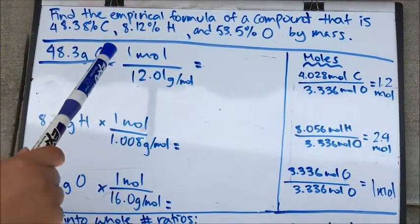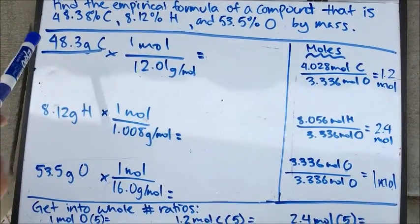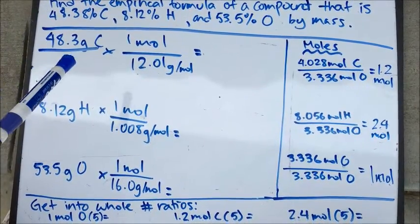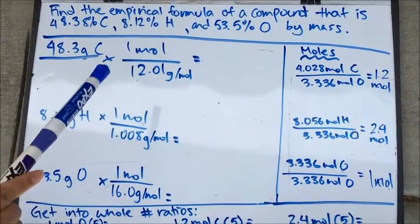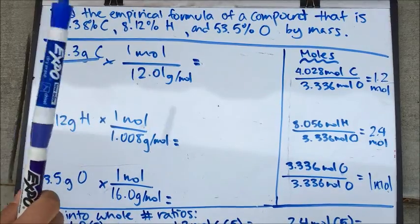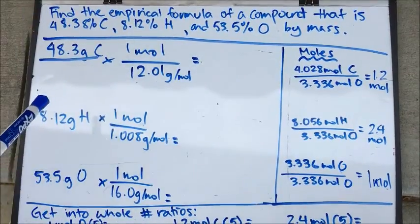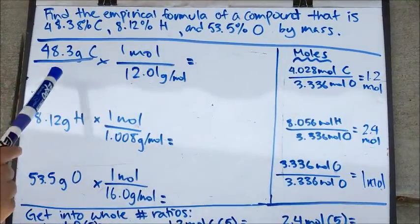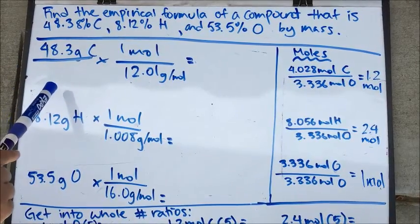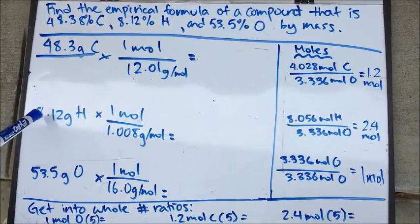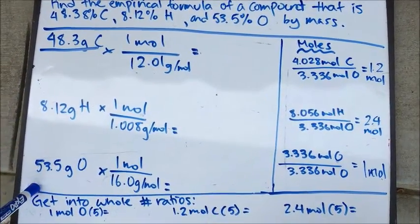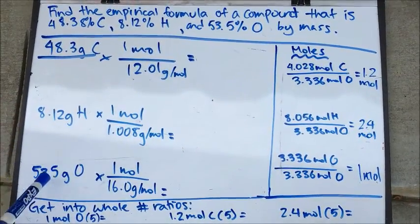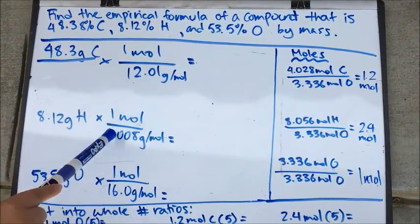This is how you find the empirical formula of a compound that is 48.38% carbon, 8.12% hydrogen, and 53.5% oxygen by mass. The first thing you do is assume that these percentages are all out of 100 grams, so just convert all these percentages into grams. Then you want to change all these grams into moles.